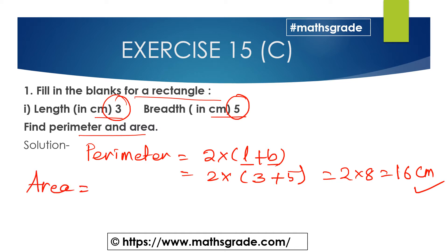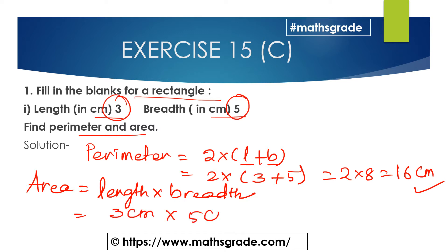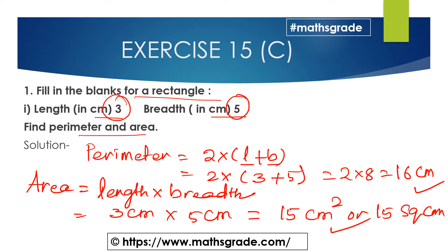Now area of the rectangle formula is length multiplied with breadth. The length is 3 cm and breadth is 5 cm, so 3 multiplied with 5 is 15 cm². So perimeter of the rectangle having length 3 cm and breadth 5 cm is 16 cm and area of the rectangle is 15 cm².